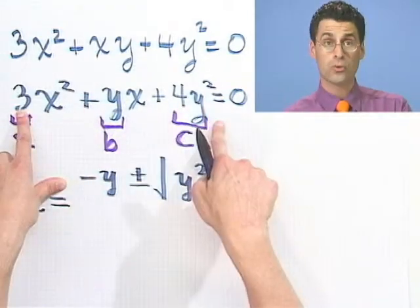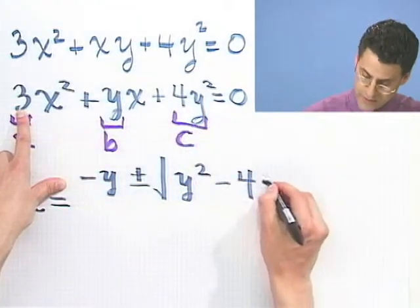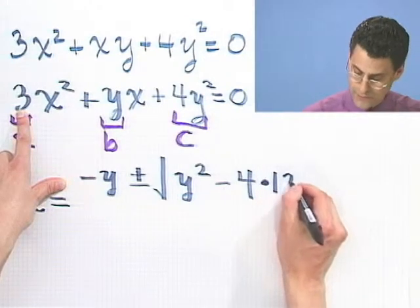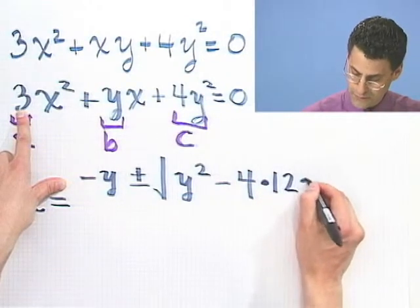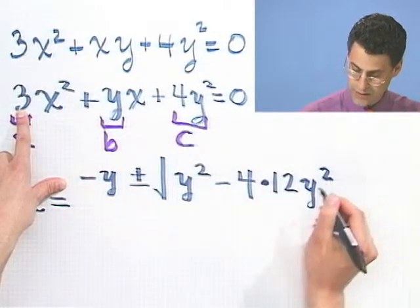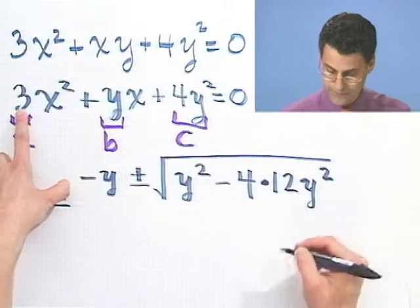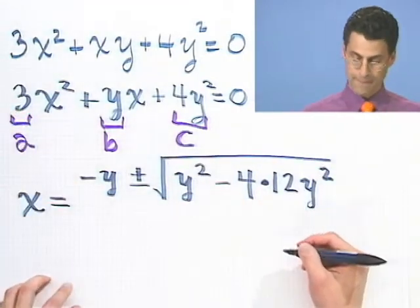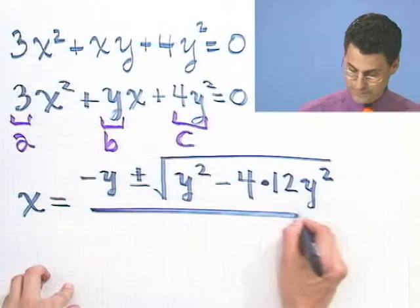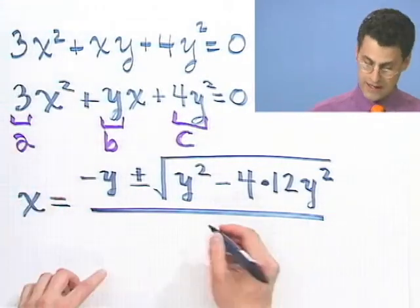3 times 4y² is 12y², so I have to multiply this 4 by 12y², all divided by 2a, which is 6.